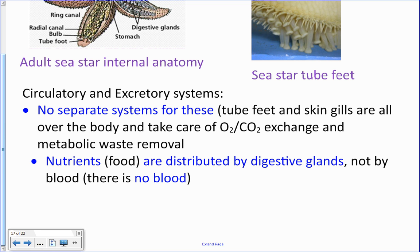The tube feet also remove metabolic waste — any metabolic waste the animal produces is excreted through them. They don't need a special excretory system. They also don't need a circulatory system because nutrients from eating are distributed by the digestive glands. Those glands take up the majority of space in each arm and distribute nutrients, so these animals have no blood, no heart, and no circulatory system at all.